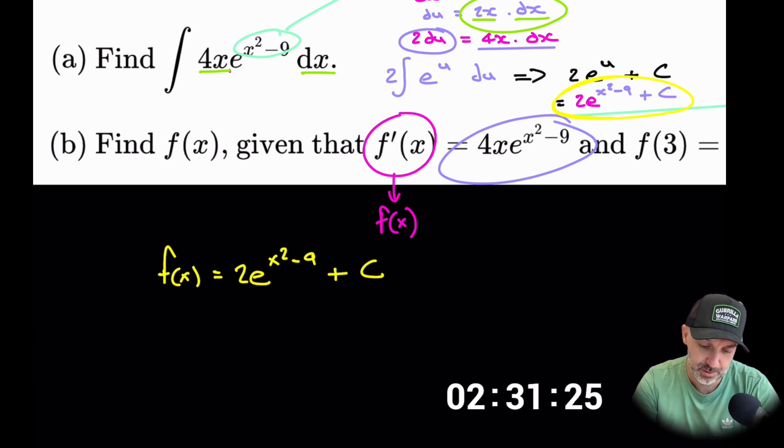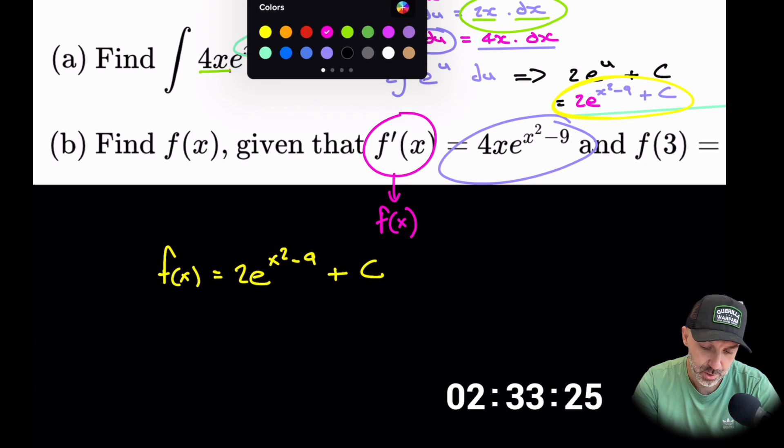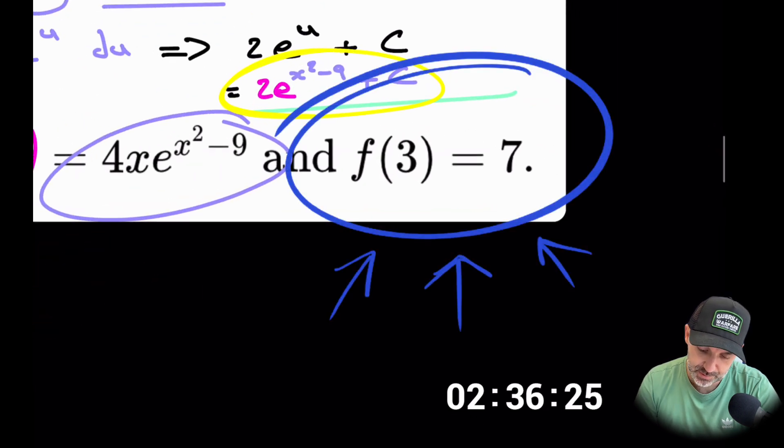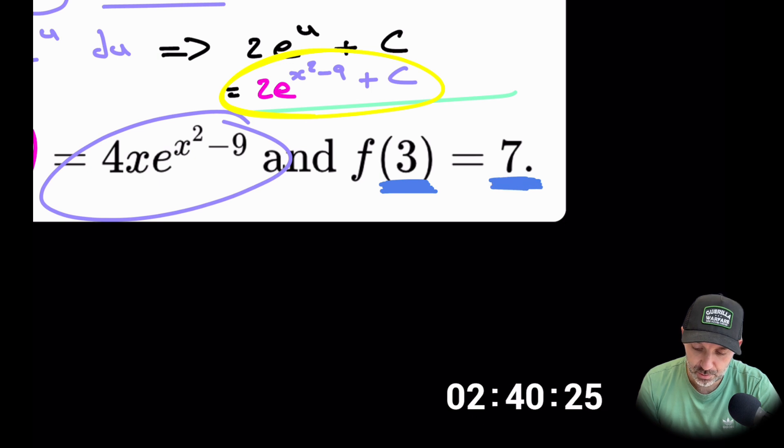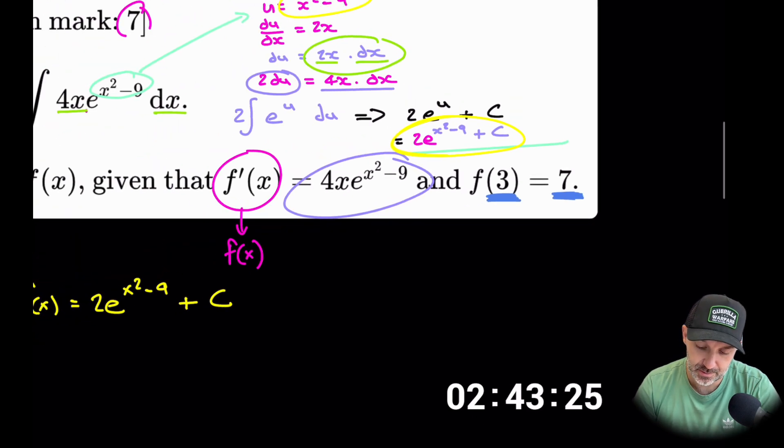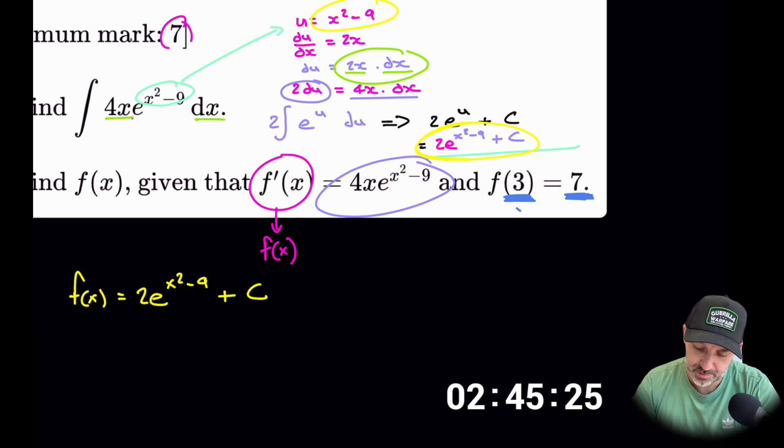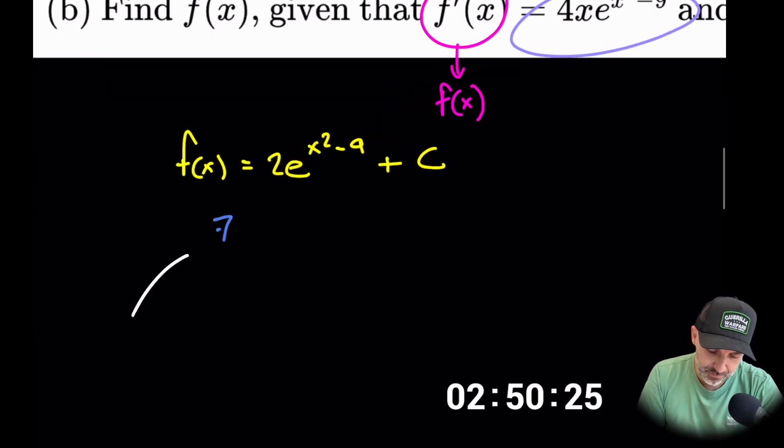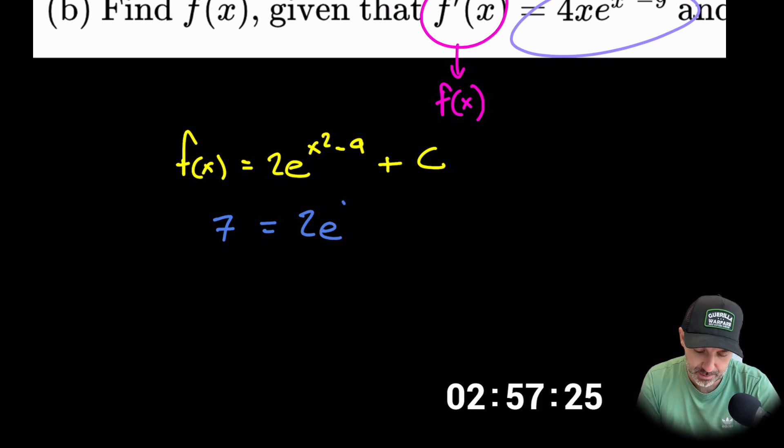But they have given us some more information in the question. If we just go over to the right hand side here, we will see that they told us that when we substitute 3 in for x, the result for y would be 7. I know this is in terms of f(x), but just think of this as when we substitute x in, the result would be y. So 7 is equal to 2e, and then we substitute 3 in, so that would be 3 squared which is 9 minus 9 which is 0, plus c. Now anything to the power of 0 is just 1, so that's 7 equals 2 plus c. So c is equal to 5.